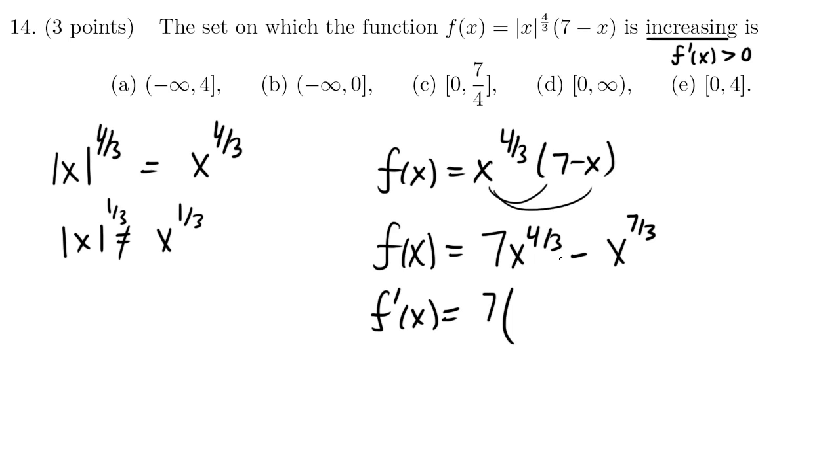And now I think we'll do the derivative. That way we avoid having to use product rule. So 4 thirds x to the 4 thirds minus 1, which is 1 third. And the derivative of this, we bring the 7 thirds to the front, x to the 7 thirds minus 1, which is 7 thirds minus 3 thirds, which is 4 thirds. And this is 28 over 3, x to the 1 third minus 7 over 3, x to the 4 thirds.